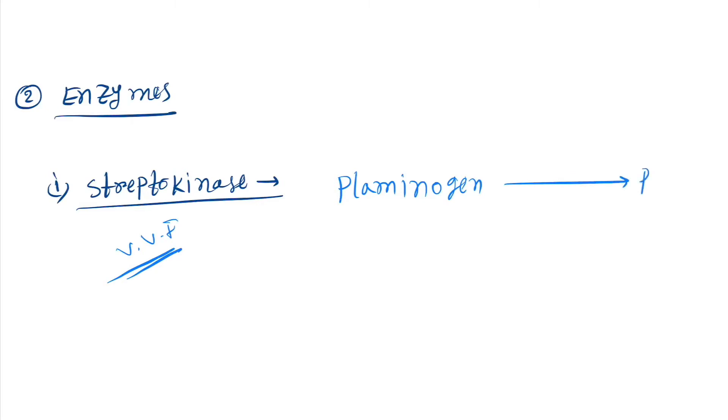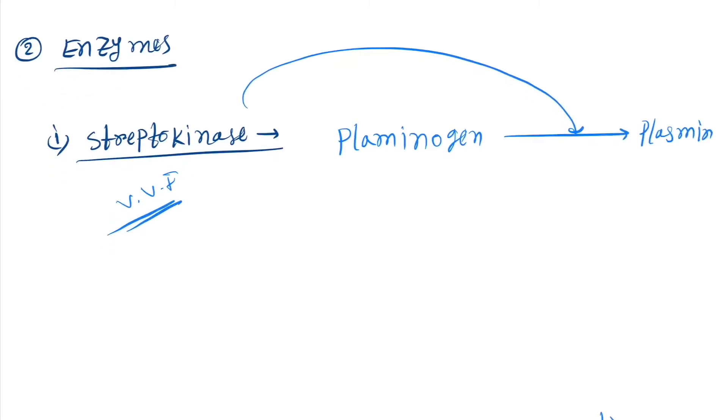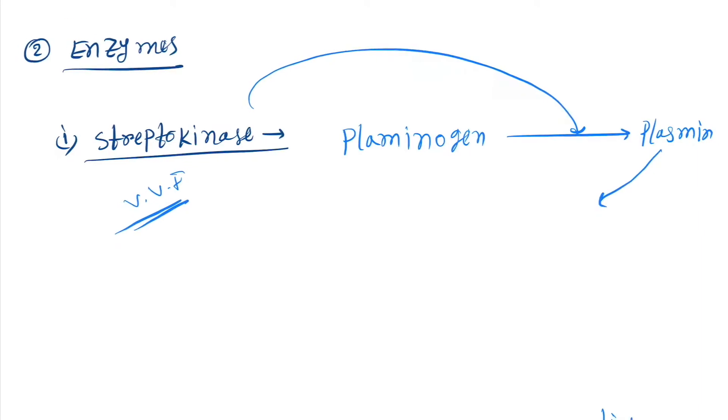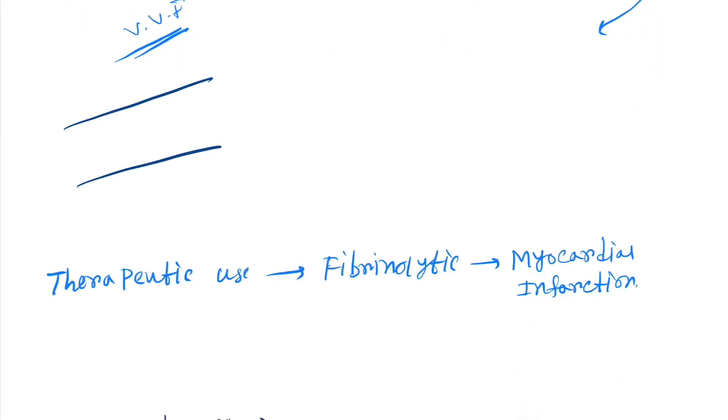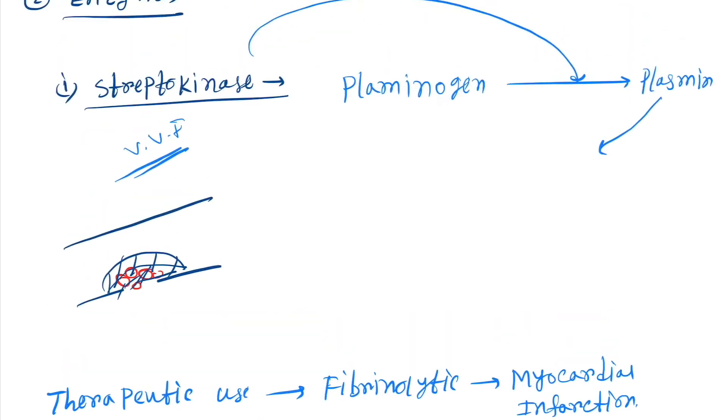Streptokinase activates this step. Now plasmin, let's take this is a blood vessel and here there is an injury. Platelets will settle there, and fibrin net is formed. Fibrin net is formed so they cannot able to escape: RBCs, platelets. Now plasmin will cause breakdown of